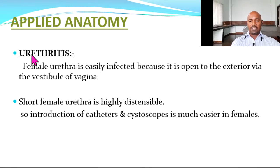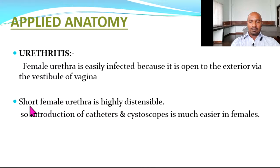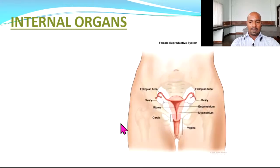Applied anatomy — urethritis. The female urethra is quite easily infected because it is open to the exterior by the vestibule of the vagina, and the urethra is very short — about 5 centimetres in females — and does not have a curved or tortuous course. The moist vaginal vestibule can house bacteria which can travel up the urethra and cause urethritis and cystitis or lower urinary tract infection. However, the short female urethra is highly distensible, so introduction of catheters and cystoscopes is much easier in females compared to males.